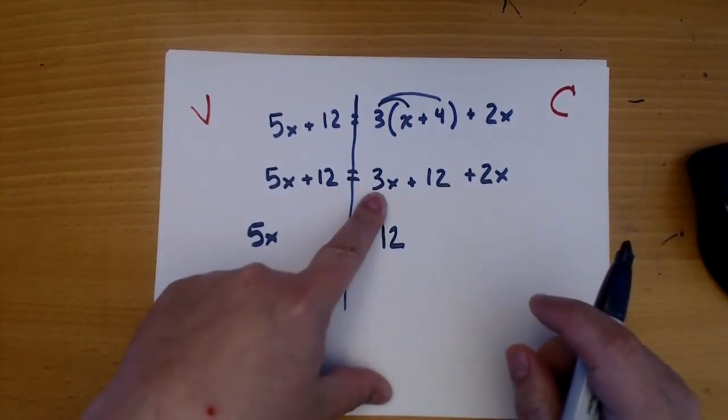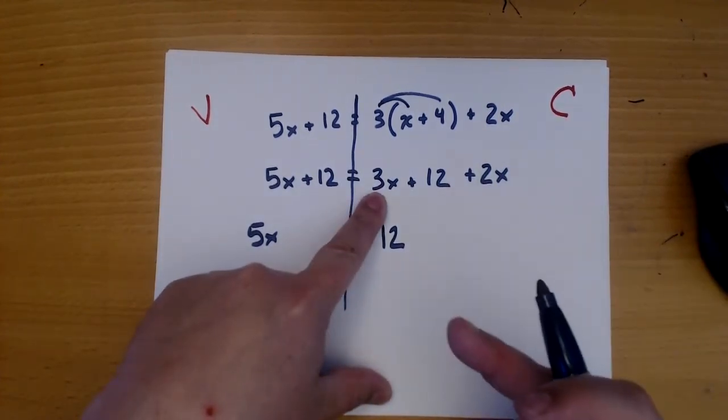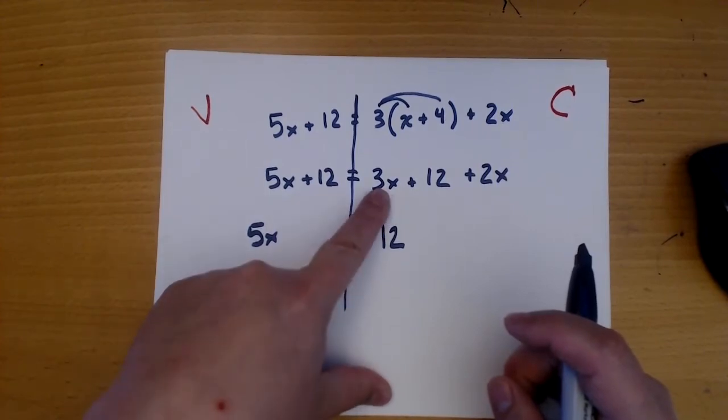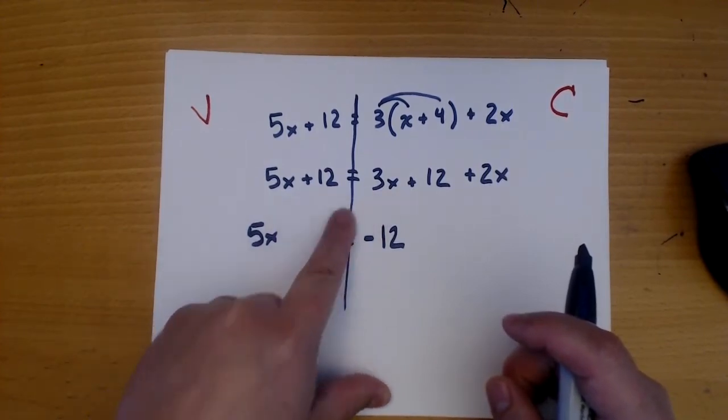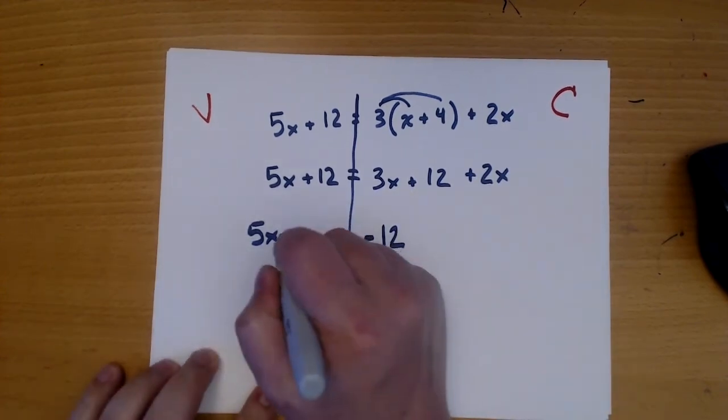The 3x is not a constant. It's a variable. It belongs over here. So we pick it up and we move it. And if it's positive here, it's negative here.